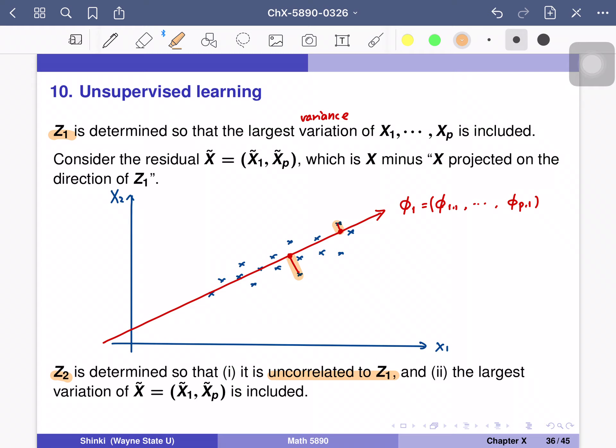So in this way, z1 includes most important information, z2 includes second most important information and so on. In this way, even if we have hundreds of variables, we expect the first few variables include the most information of x1 to xp.